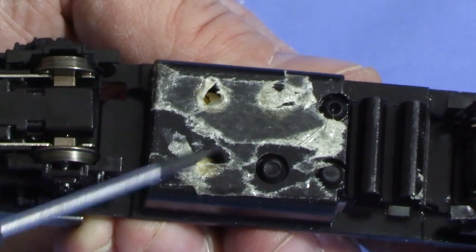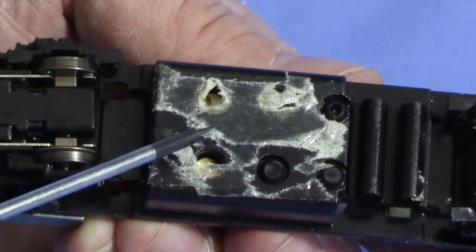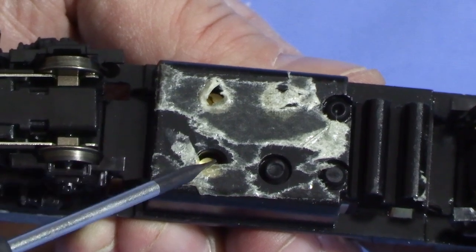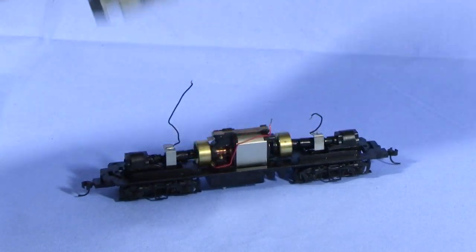You might need to dig through what's left of the tape to see them, but there are two brass screws that need to be loosened with a small flat-bladed screwdriver. After all that's done, the weight will separate from the chassis.